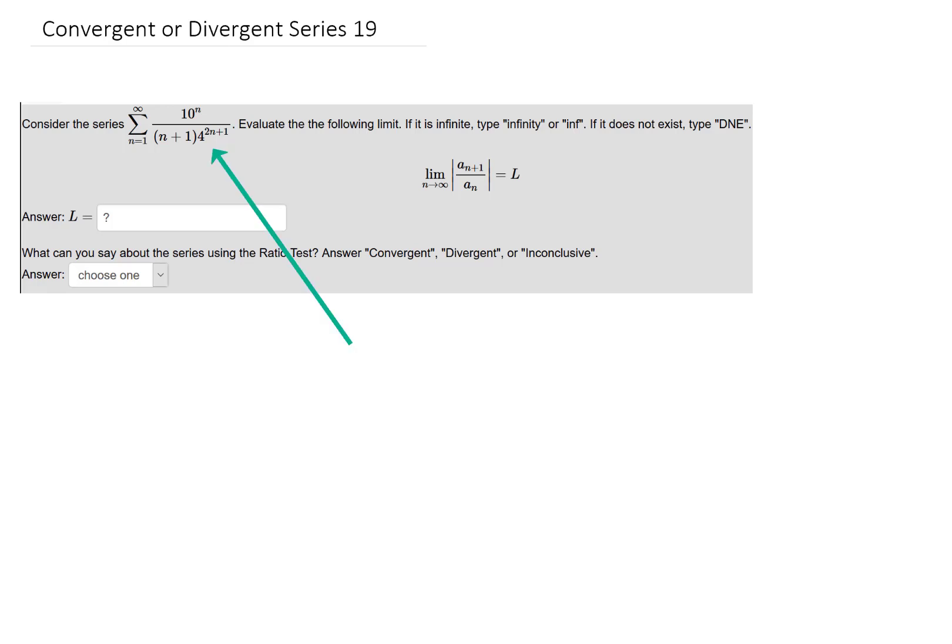We have this ugly looking series here, and we want to do a ratio test to determine whether the series converges or diverges. Well that means finding this limit right here.